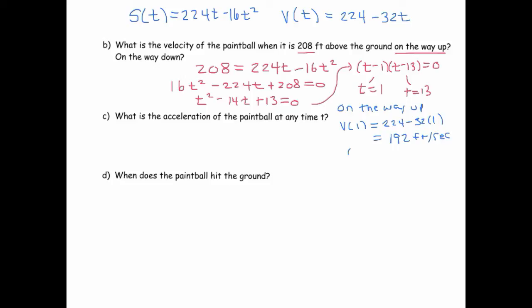And on the way down, we're evaluating the velocity at 13. And that ends up giving us negative 192 feet per second. So you might notice that those are the same number in absolute value, but just different sign. And that's because there's symmetry in this.